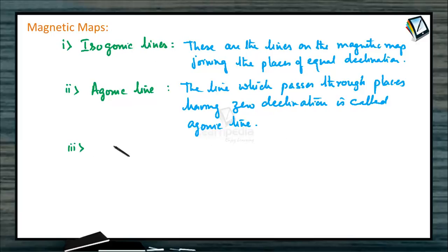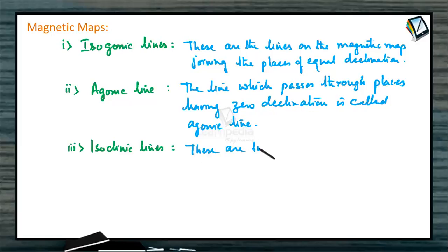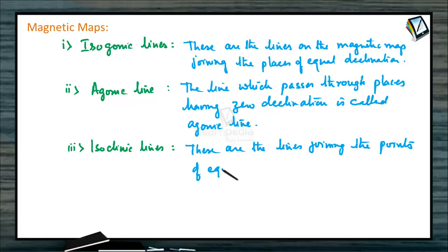Third, isoclinic lines. These are the lines joining the points of equal dip or inclination.